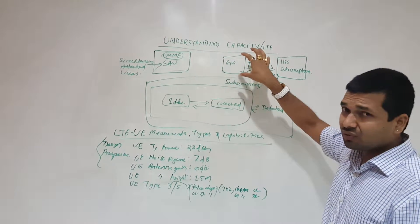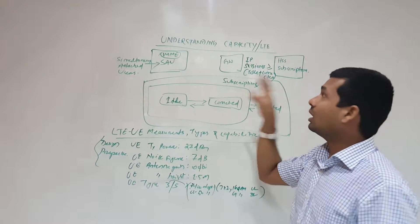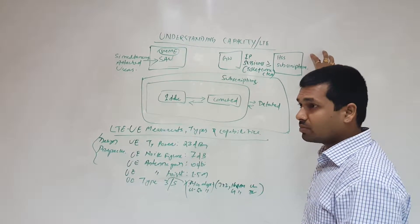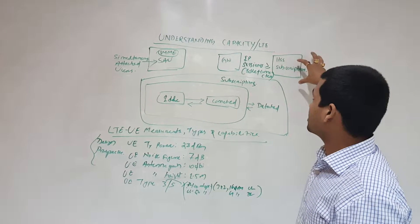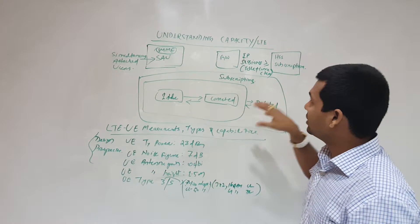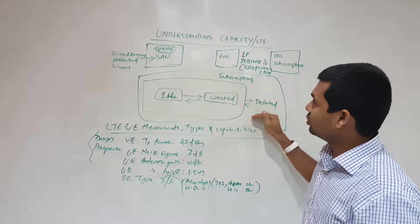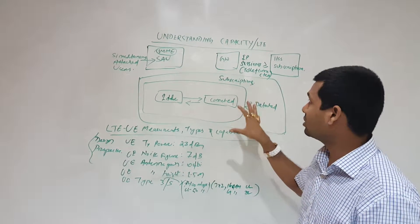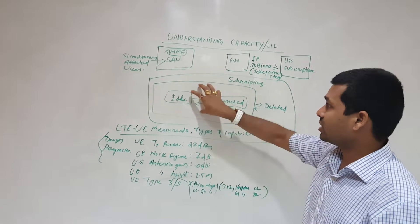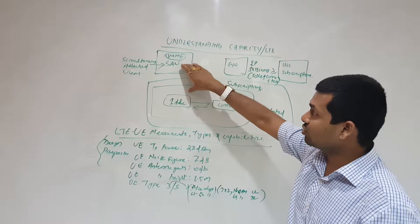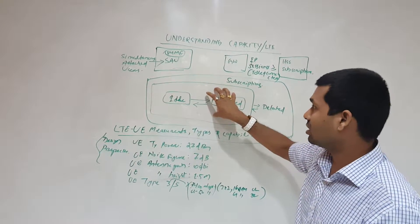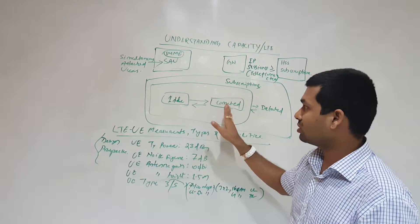The third point is HSS subscriptions - what is the maximum number of subscriber subscriptions we can take, the total number of subscriptions allowed in the network. These are detached, these are attached. This is controlled by MME simultaneous attached users. They move from idle to connected mode and connected to idle mode as per requirement.